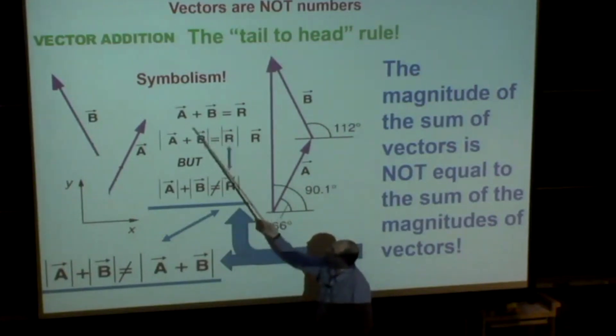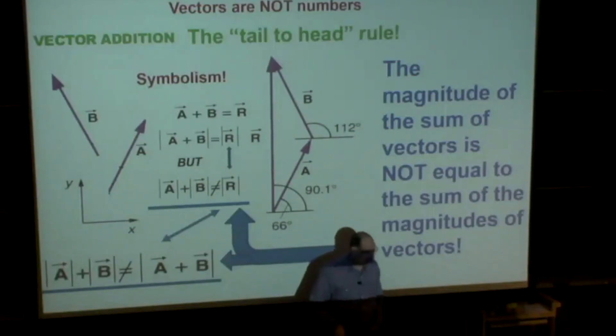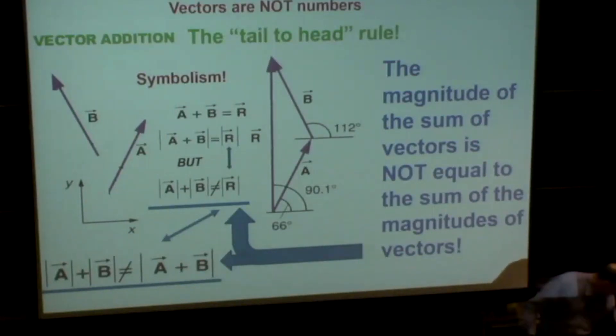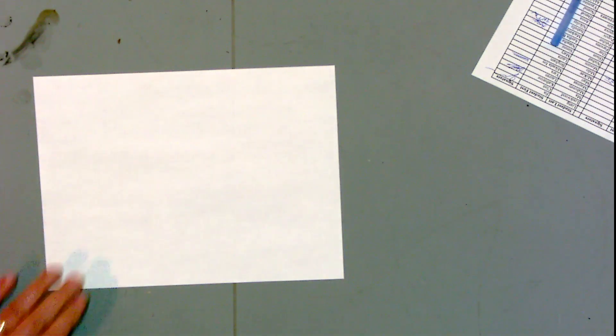That's not a vector, and this is the sum of two vectors, which is also a vector. Every vector has magnitude. It's important to remember that vectors are not numbers. I want to demonstrate a simple measuring experiment.